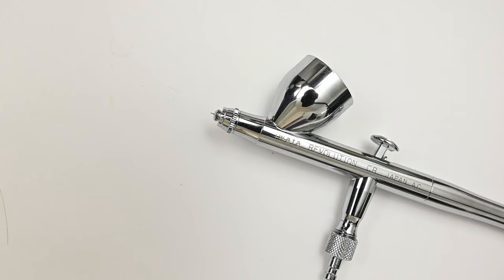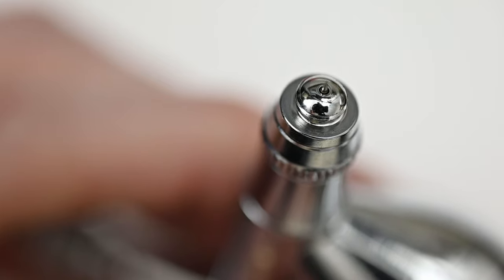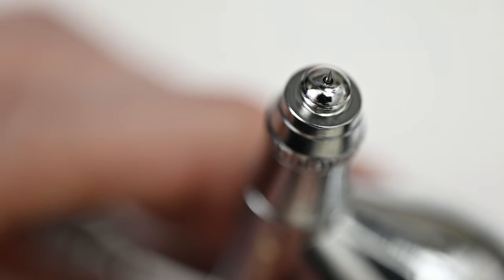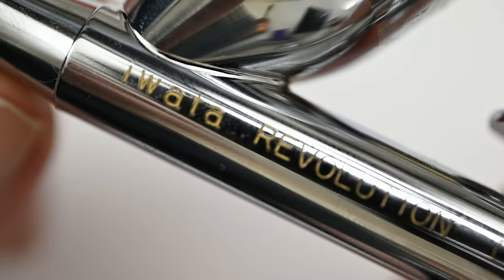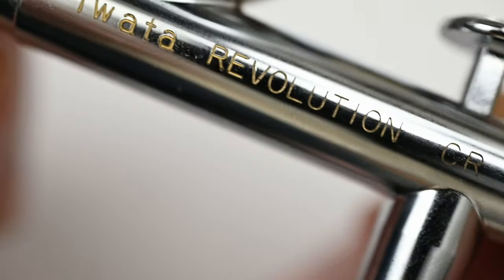The Iwata Revolution has a larger needle and nozzle size at 0.5 millimeters. Again, this is much larger than the Eclipse, which has a nozzle size at 0.35. The needle is aligned perfectly within this nozzle, and the airbrush itself has a very nice chrome finish to it.